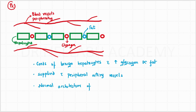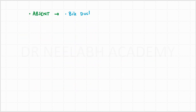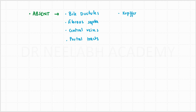Normally, the normal architecture of the liver is absent in these lesions. What all things are absent in these lesions are bile ductules, fibrous septa, central veins, portal tracts, Kupffer cells, and there is no portal venous supply.